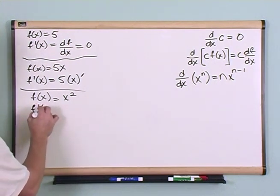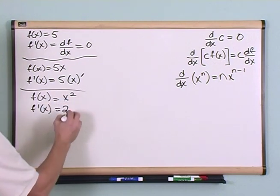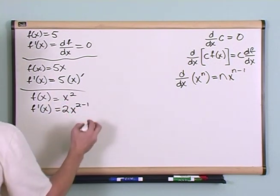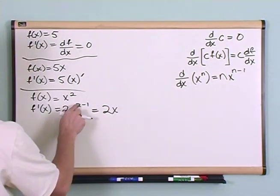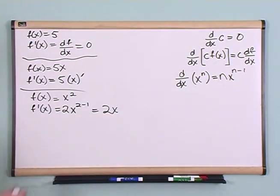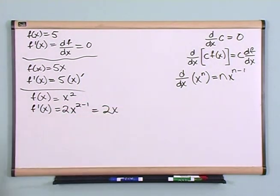Then simply f prime of x, which is the derivative, is two, I pull the exponent down, times x, and in the exponent I have two minus one, which is just like this, which is just two x, because two minus one is one, x to the one is x. So all you do is you take the exponent, you pull it down, you write x, and then in the exponent it's just, in this case, two minus one, which is one. So that's the answer to that.